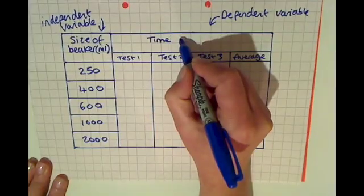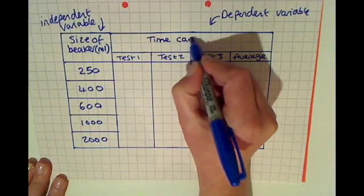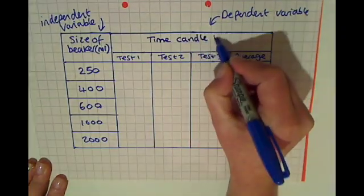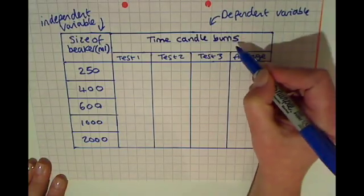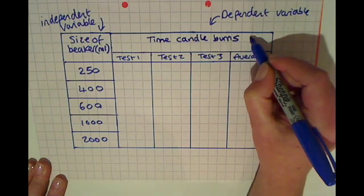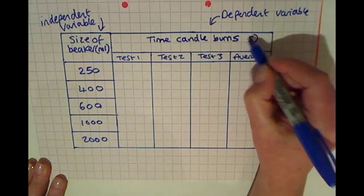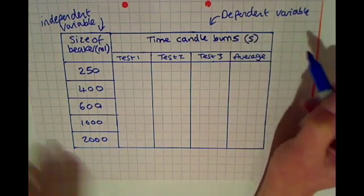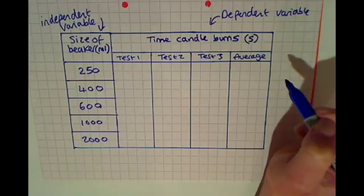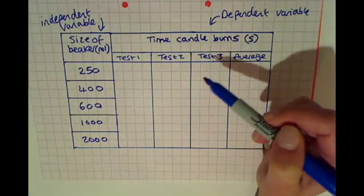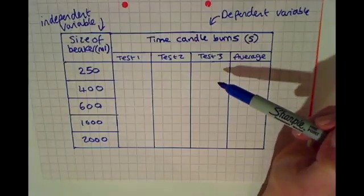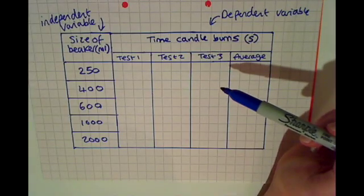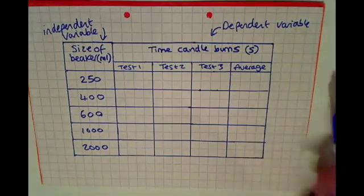That a candle burns. Okay, so the time the candle burned or burns. And because it's a time measurement, my unit in this case is seconds, so I can just write the s there for the time the candle burns. And then I'm ready to do my experiment and I'm ready to fill in my table of results.